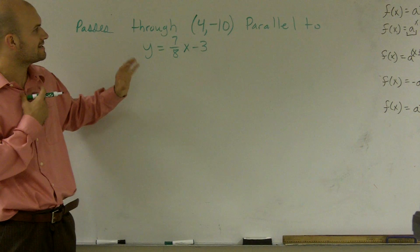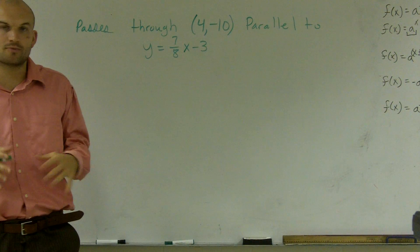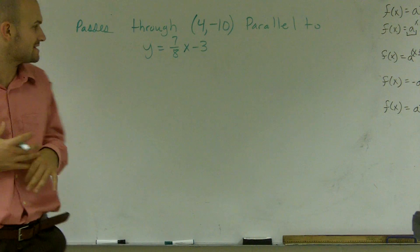All right, what I'd like to do is show you how to find an equation that goes through point (4, -10) but is parallel to y equals 7/8x minus 3.